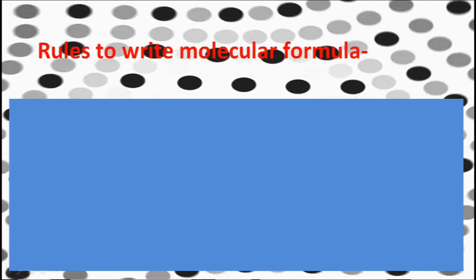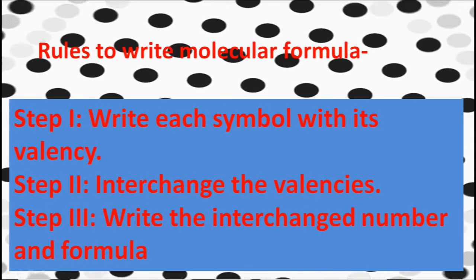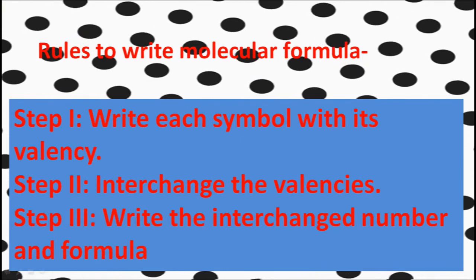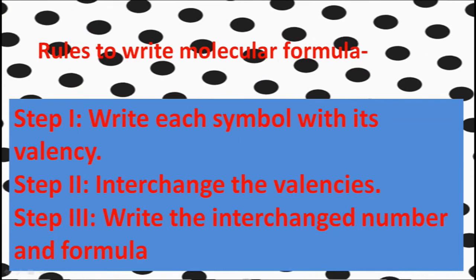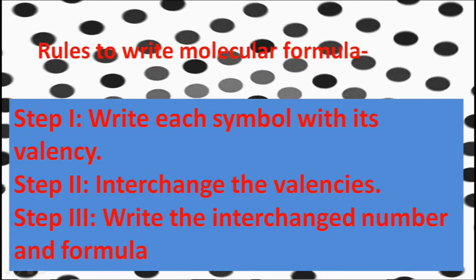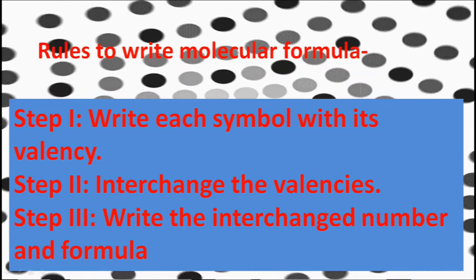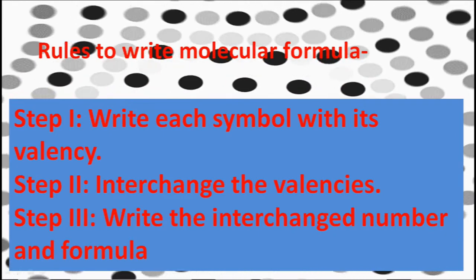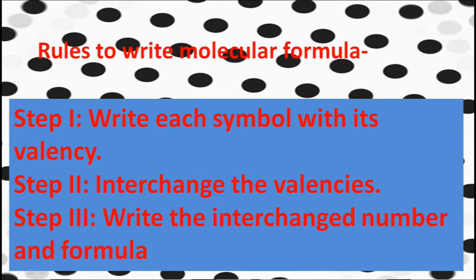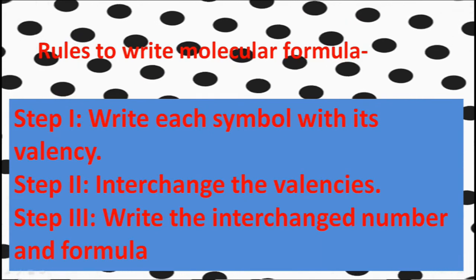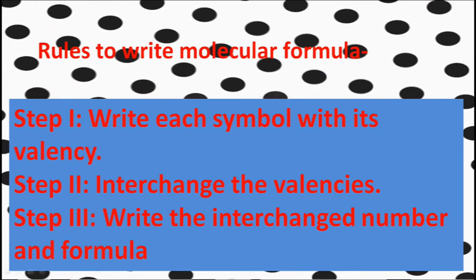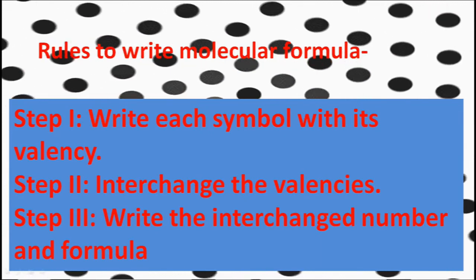Rules to write molecular formula: First step — write each symbol with its valency. Second step — interchange the valences. Third step — write the interchanged number with the formula. Then we get the molecular formula of the compound.